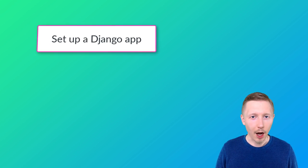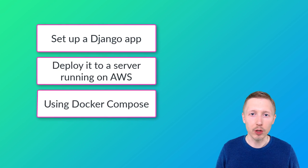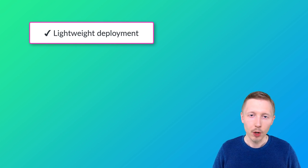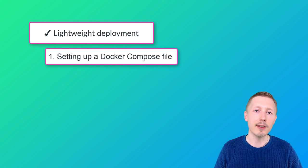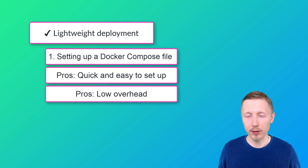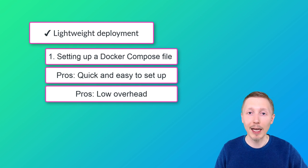In this video, I'm going to show you how to set up a Django app and deploy it to a server running on AWS using Docker Compose. This is going to be quite a lightweight deployment. All we're going to be doing is setting up a Docker Compose file that will allow us to run the code in a production-type environment. If you have a small project and just want to get it online so that users can view the application, then this is the deployment method for you.